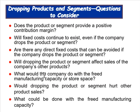Other questions to consider: Does the product or segment provide a positive contribution margin? Will fixed costs continue to exist even if the company drops it — if they can eliminate those costs, that's one thing, but if they continue that matters. Are there any direct fixed costs that can be avoided? Will dropping it affect sales of other products? What would the company do with the free manufacturing capacity or store space? That's the opportunity cost question.